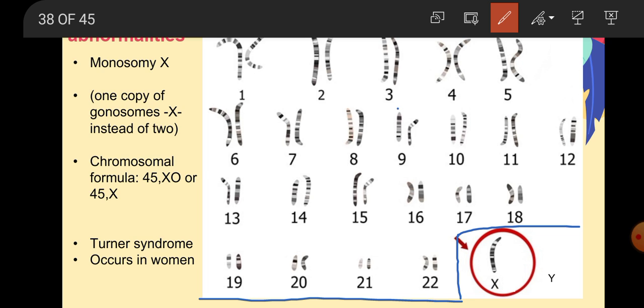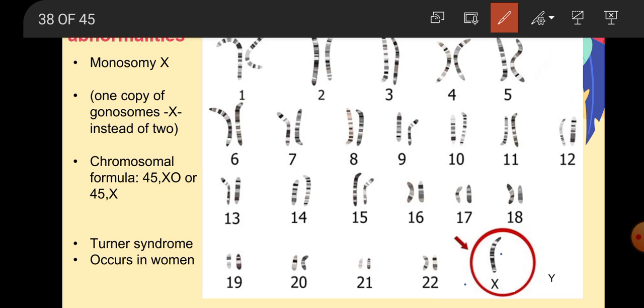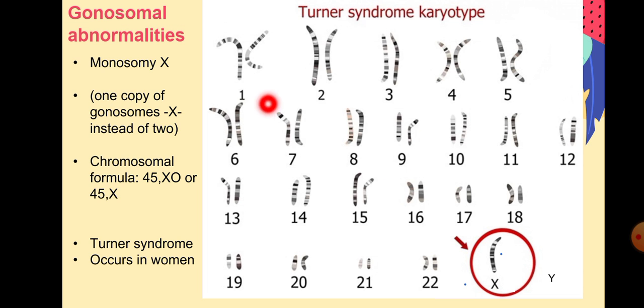So here, as you can see, in XY, instead of having two copies in X as normal female, we have one copy. So we have one missing copy. What do we call this case when we have a missing copy? We have one missing copy. This is the abnormality. Why monosomy X? Because we have one copy of gonosomes X instead of two.